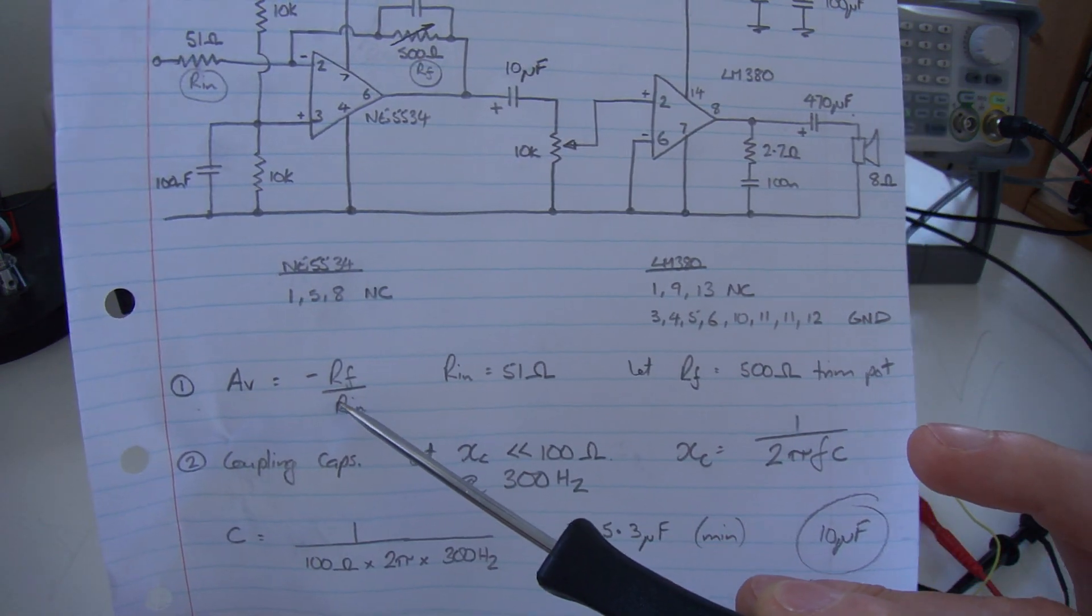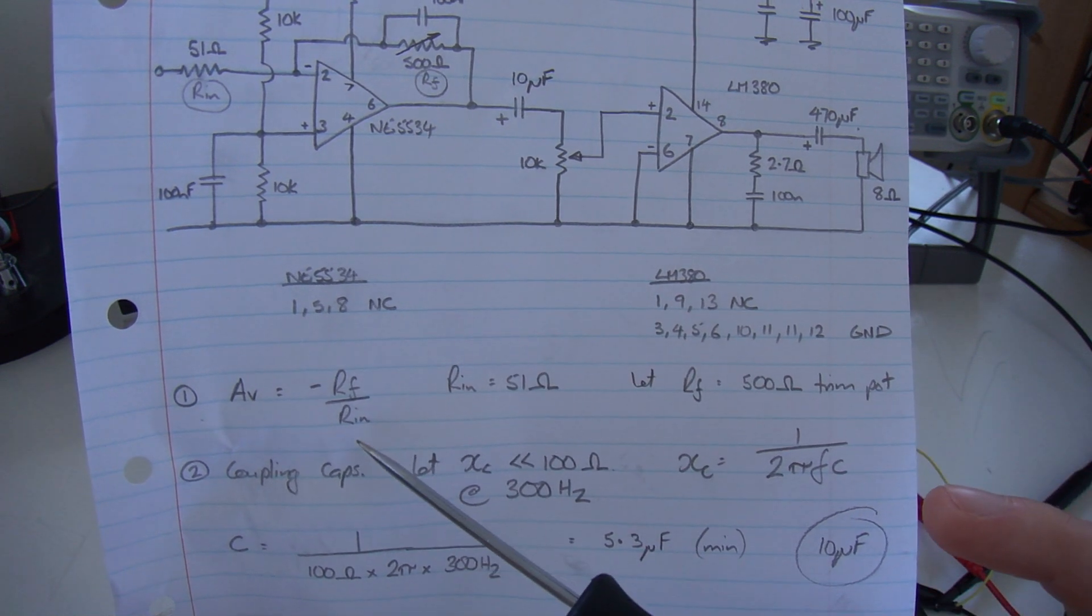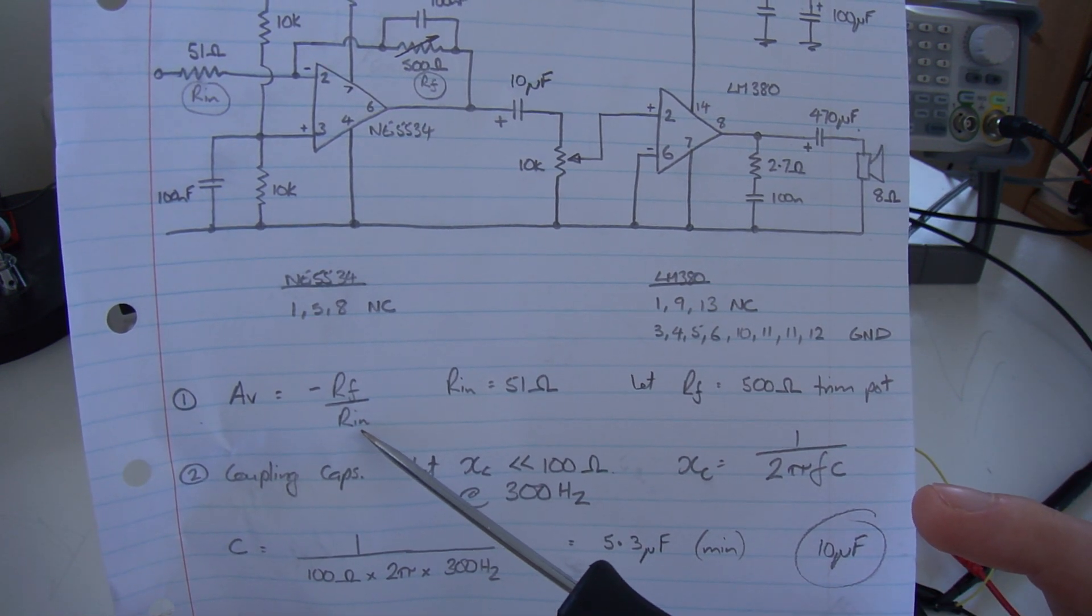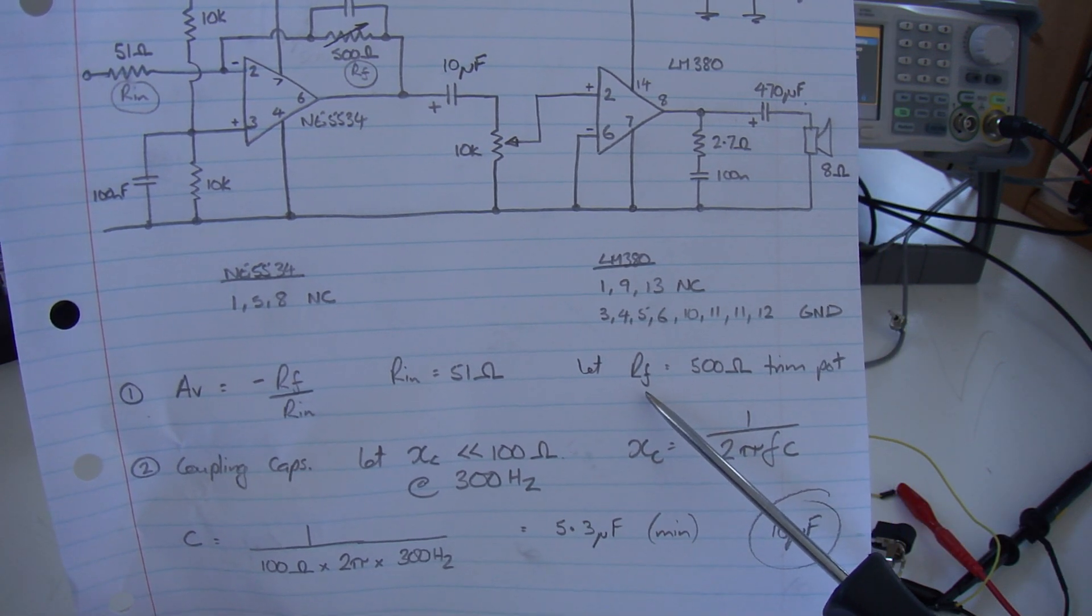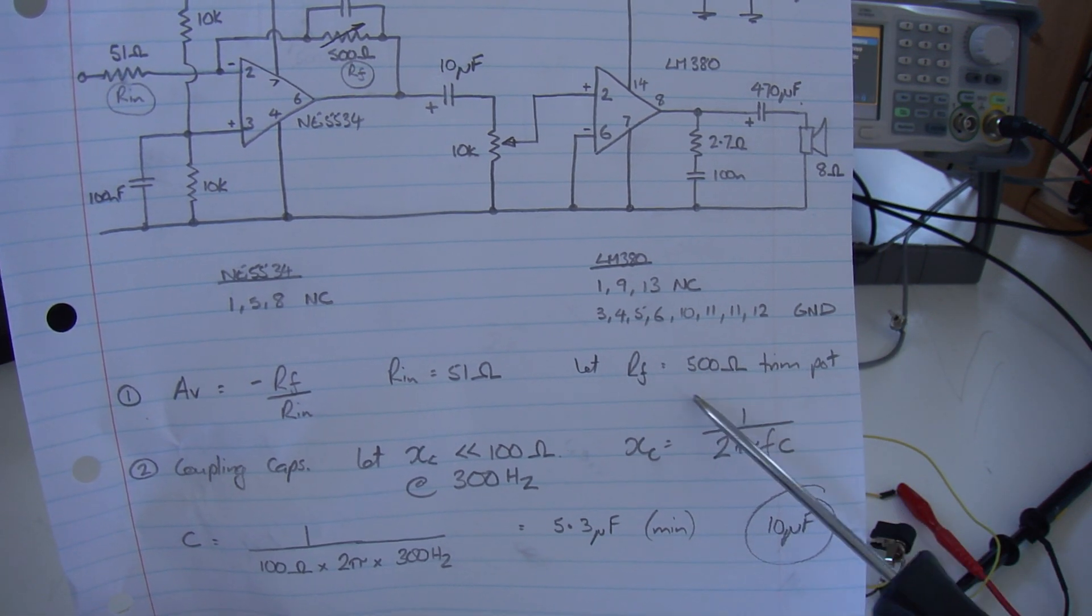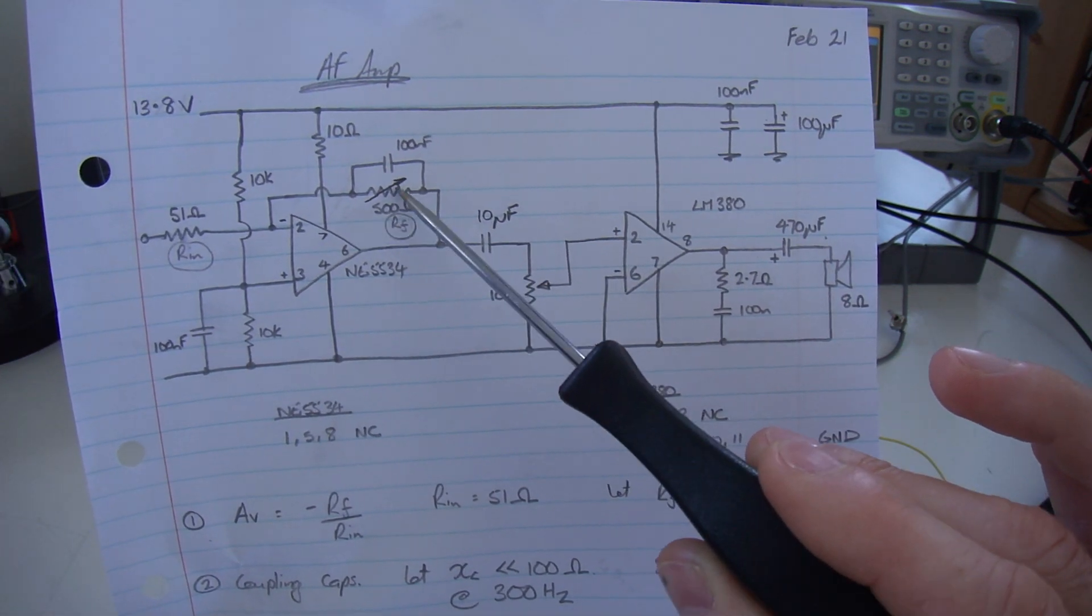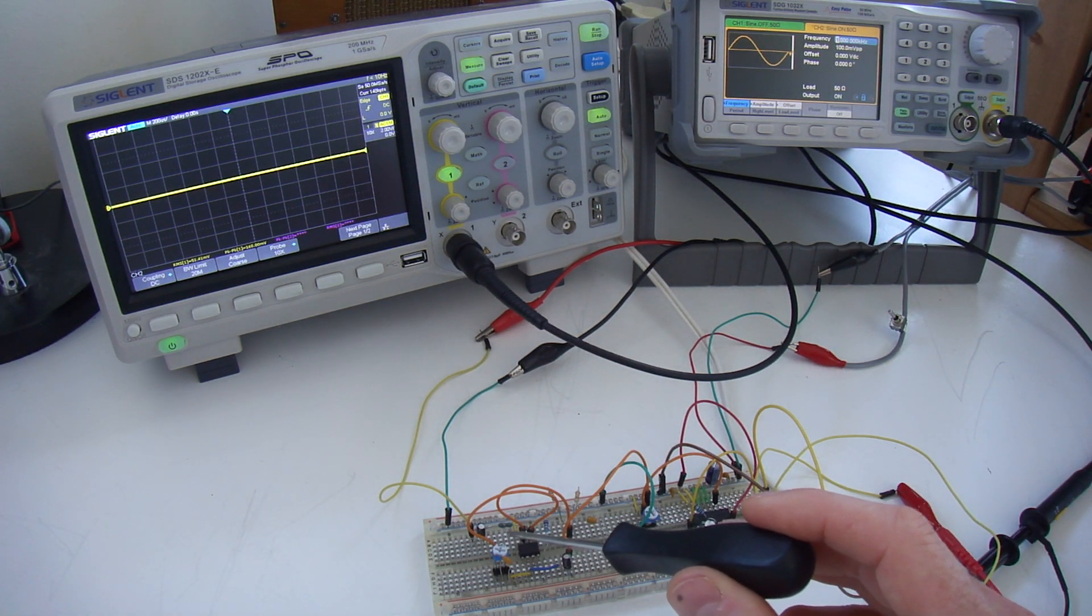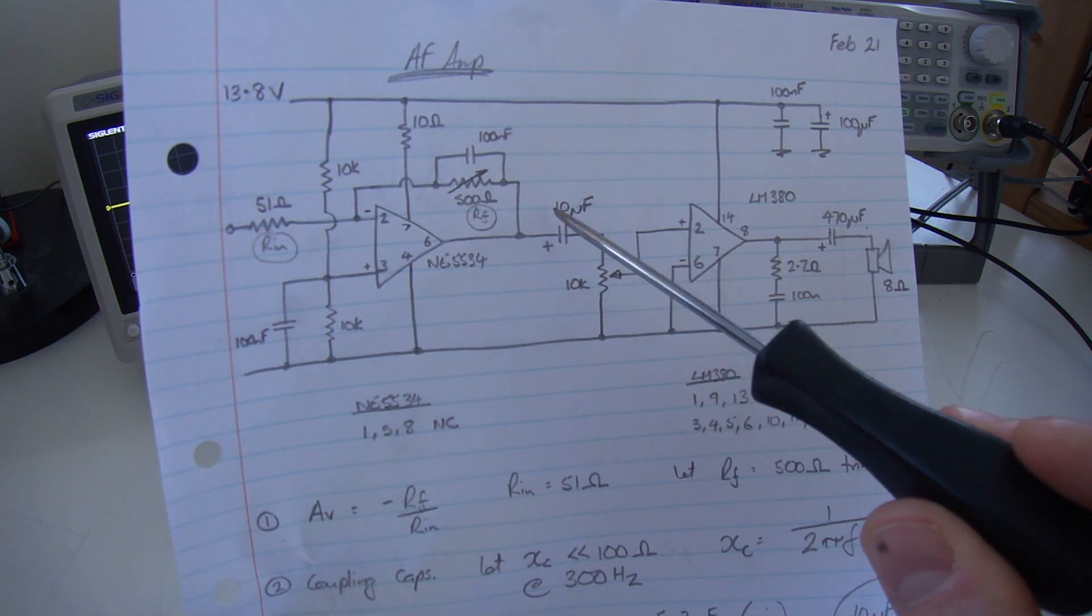So if I want to have a voltage gain of 2, 3, 4, 5, and my RN is now fixed at 51 ohms, therefore my feedback resistor needs to be in the order of up to 500 odd ohms. For the purposes of test, I have in here now a 500 ohm trim pot, which is that one right there.